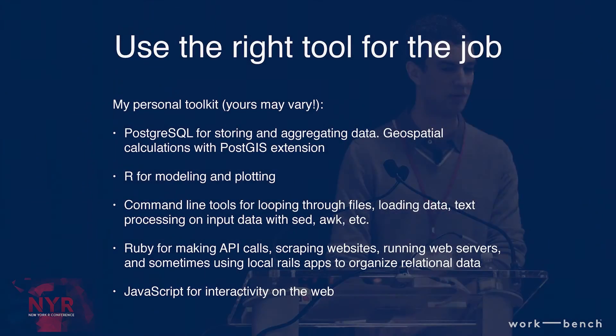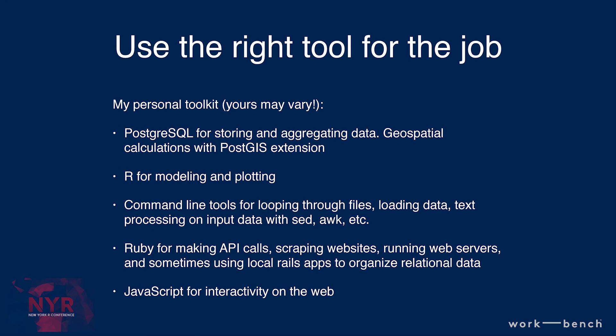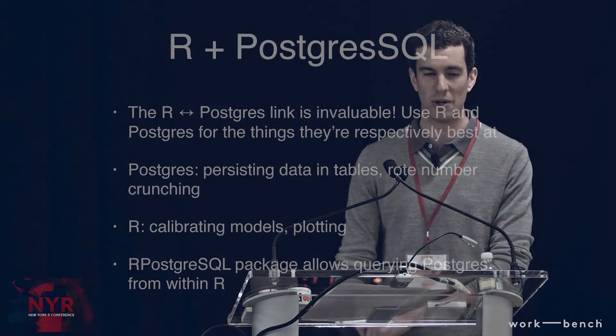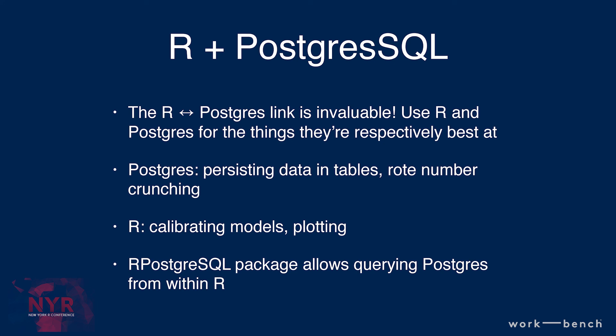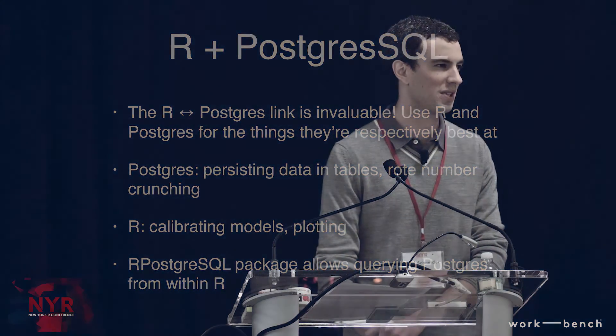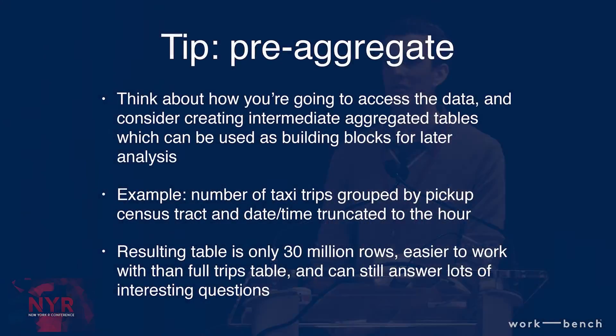The most important thing is to use the right tools for the right job. PostgreSQL is great for storing and aggregating data. PostGIS handles geospatial calculations. R really excels at modeling and plotting. Command line tools are useful for processing and loading data. Ruby is a good general programming language for making API calls and scraping websites. JavaScript is important for interactive web content. One package to highlight is RPostgreSQL, which lets you query PostgreSQL from within R — you can use each piece of technology for what it's good at: PostgreSQL for storing and number crunching, R for calibrating and plotting.